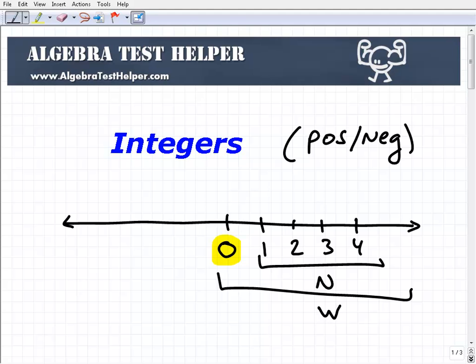These are different types of numbers, and these are all part of the real number system. But eventually, we figured out in mathematics that we have a need for negative numbers: negative one, negative two, negative three.